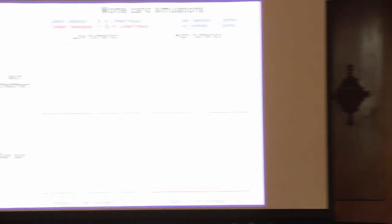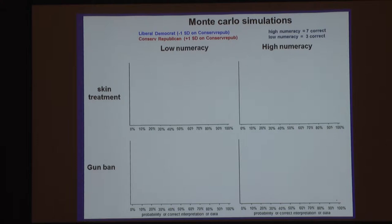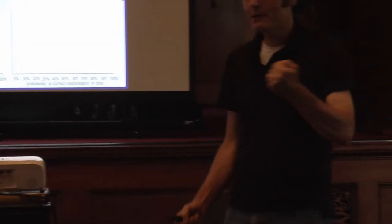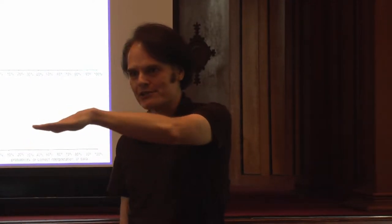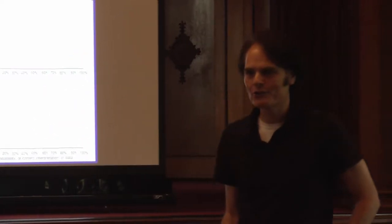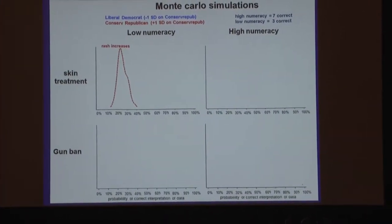I'm doing a Monte Carlo simulation. You take the numbers for the different parameters in the model — say, a conservative Republican with low numeracy in the skin treatment condition. You compute the probability from the model, but the parameters have a little error in them, so you do it with a kind of shaky hand, adding a small random number corresponding to the parameter error. You do that once, then again and again, about a thousand times, and you can see the entire probability density distribution associated with the model. This is what Nate Silver does to figure out who's going to win the election.